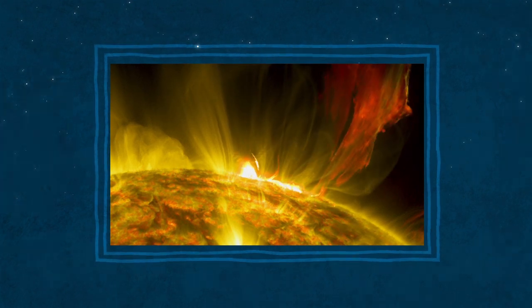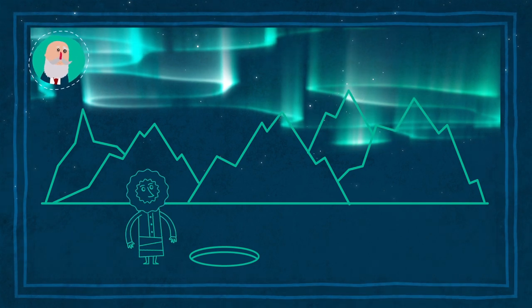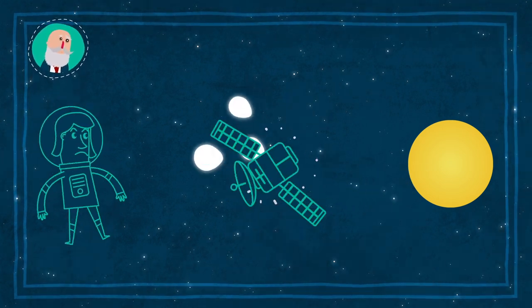Wenn die Teilchen in der Nähe der Pole in die Erdatmosphäre eintreten, erzeugen sie Polarlichter. Außerdem stören Sonnenstürme die Telekommunikation und können zu Stromausfällen führen.